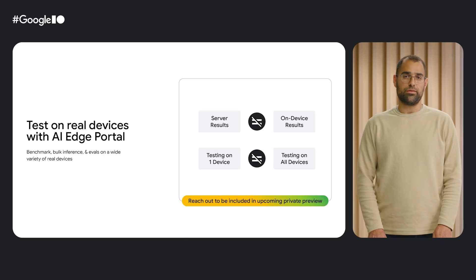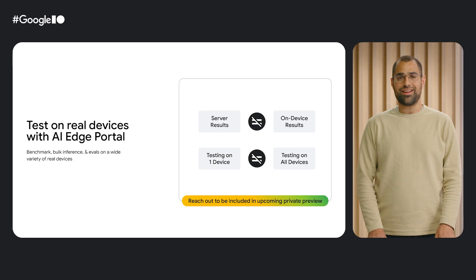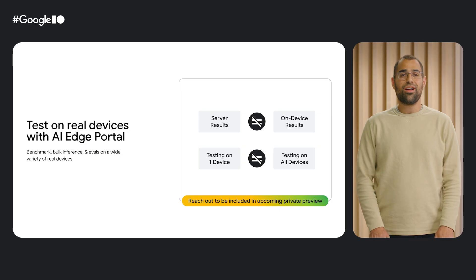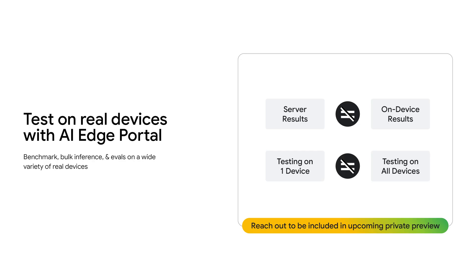For testability, we have AI Edge Portal. While most of our APIs and SDKs have Python versions to test on notebooks or desktops, running on servers or desktops will not always give the same result as running on an actual end device. And even if you do test on a real device, results vary across the hundreds of devices that your users will have in production. To ease this testing pain, we've created AI Edge Portal — a new GCP service that takes your LiteRT models and runs them across many real devices in our device lab, all with just a few clicks. You can run benchmarks, bulk inference, and even evals, all running on a large collection of devices mirroring what you will really see in production. AI Edge Portal is currently in private preview, so please reach out if you would like access ahead of our general availability release.